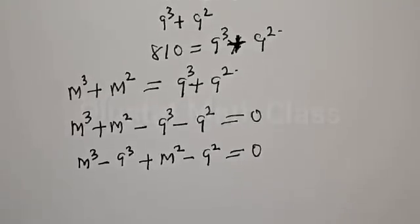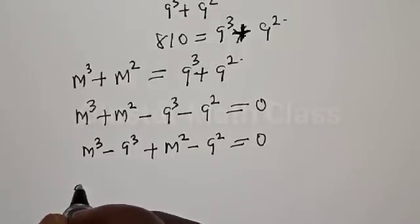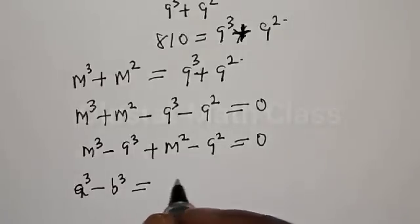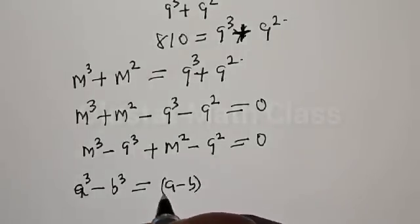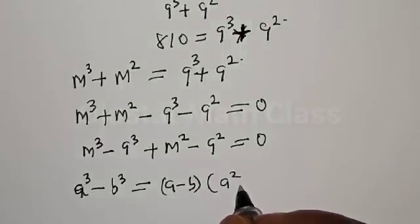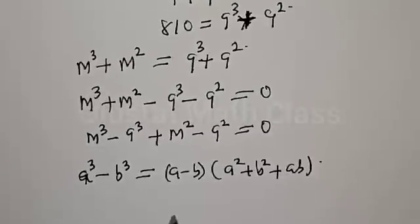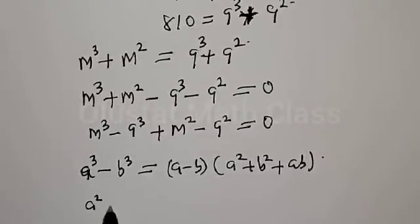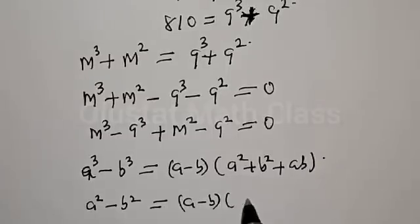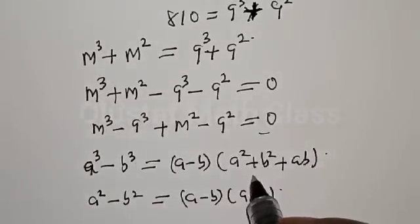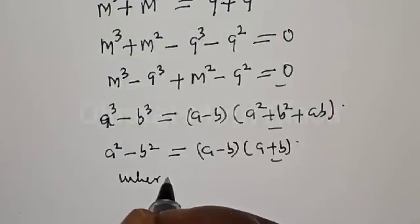Now remember, we have the algebraic identity: a³ minus b³ equals (a minus b) multiplied by (a² + ab + b²).